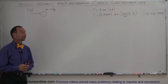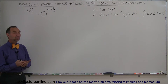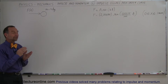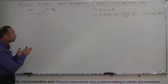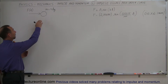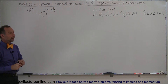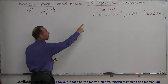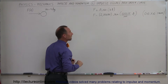Welcome to ElectronLine. Here's another example on impulse and momentum. In this case, we're going to try to find the impulse and the final velocity of an object after it's been subjected to a force. The force in this case is going to be a varying force — a force that varies over time.